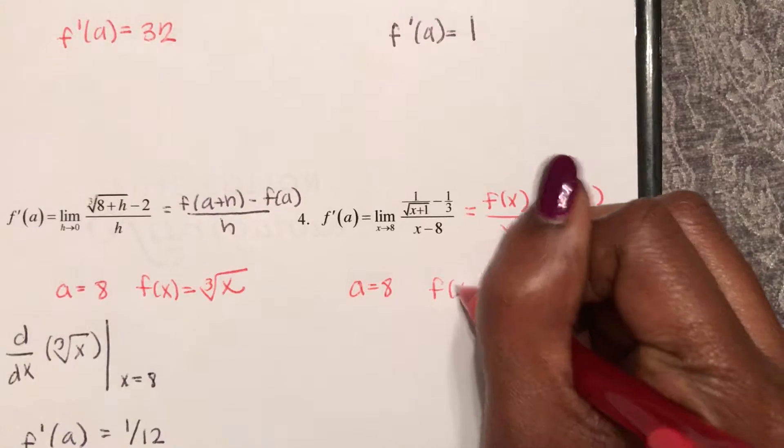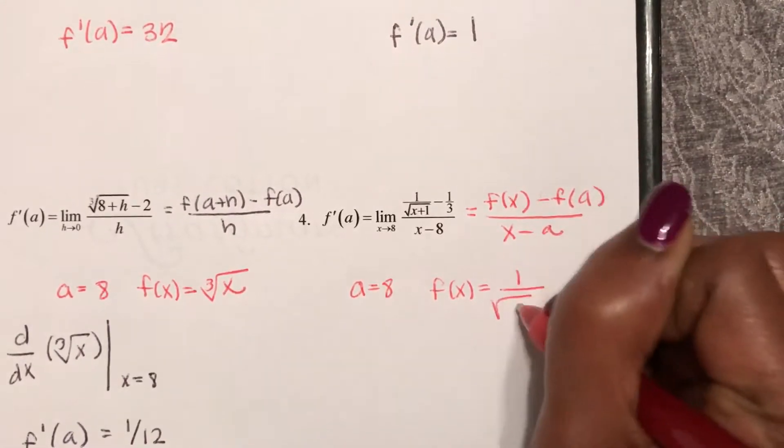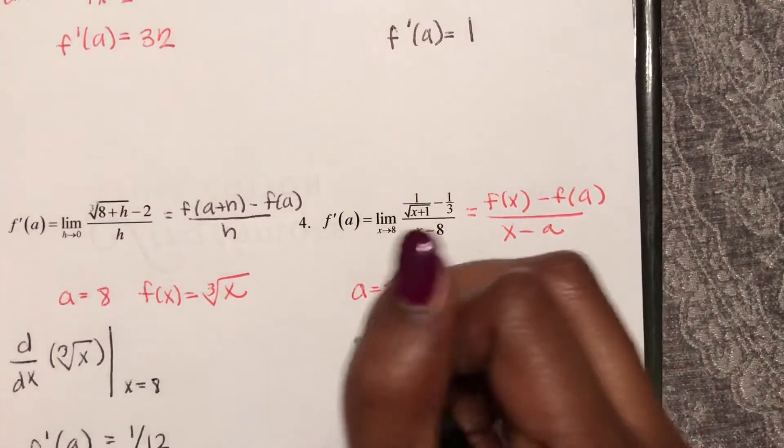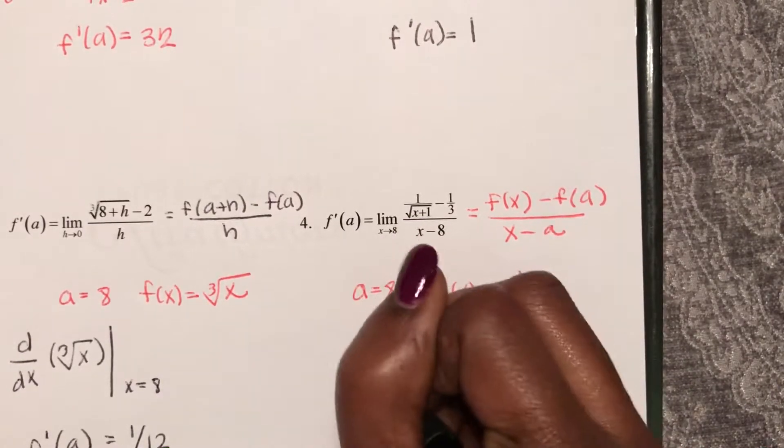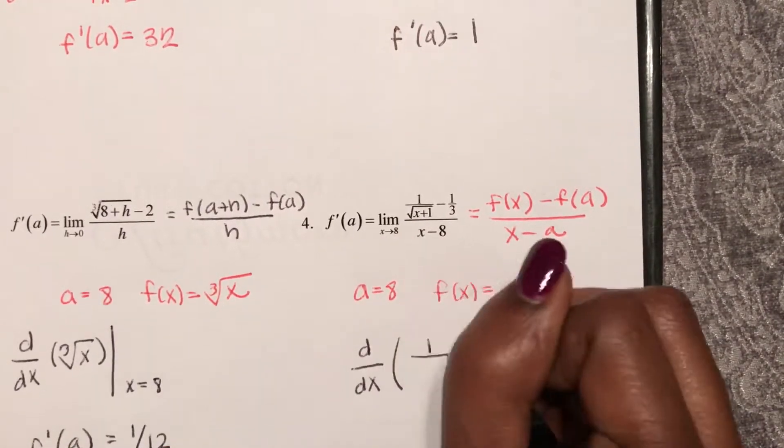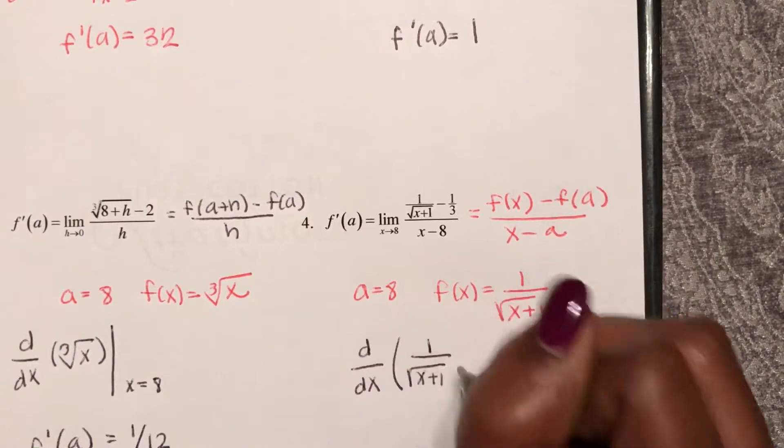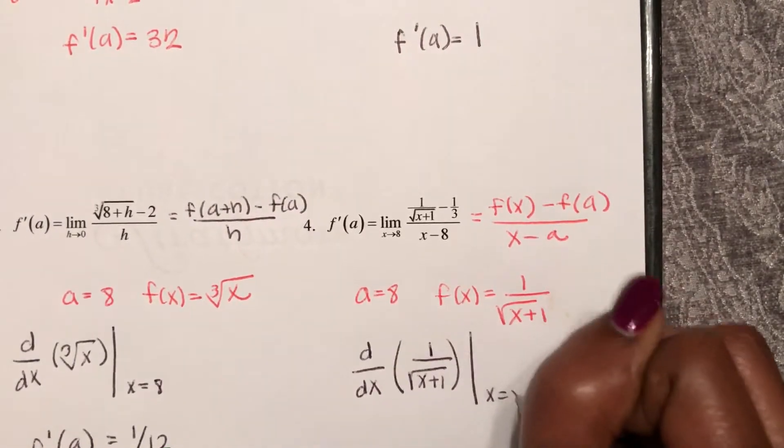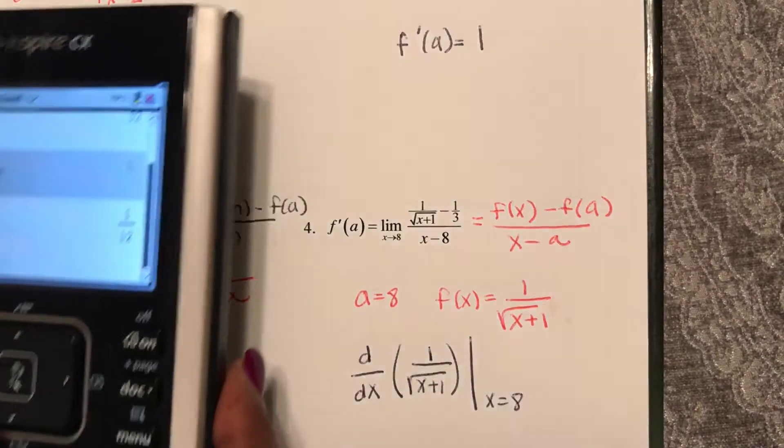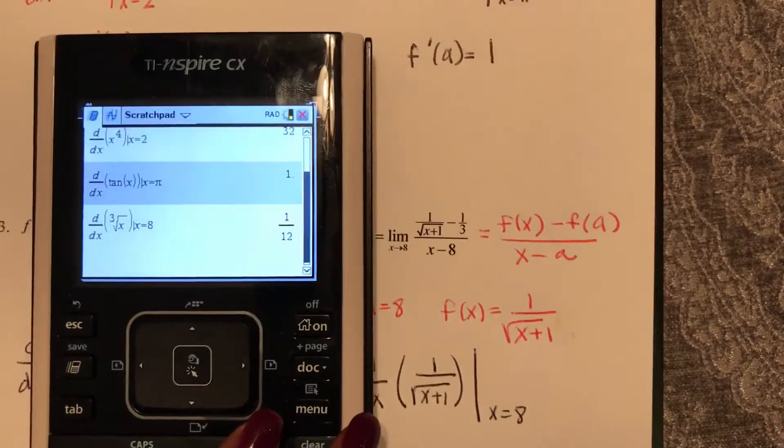f(x) equals one over square root x plus one, so we are trying to find the derivative with respect to x of our function evaluated at x equals eight. So let's pull out our calculator to do that.